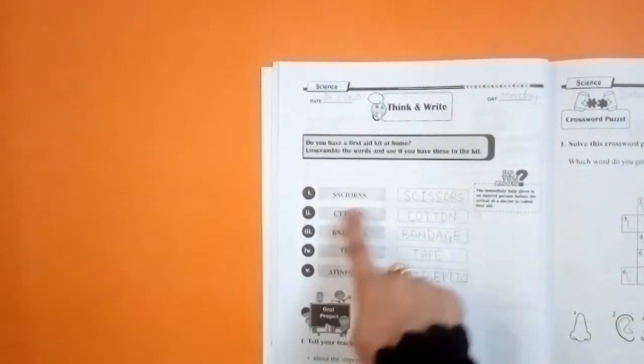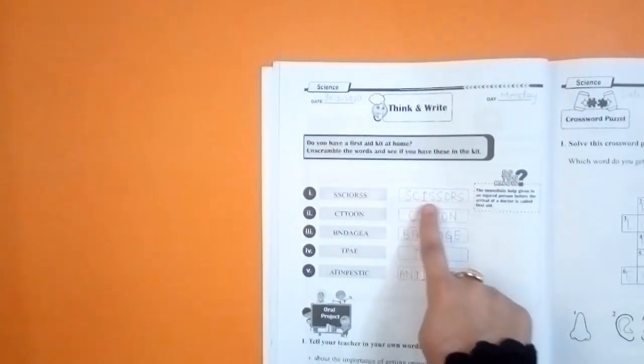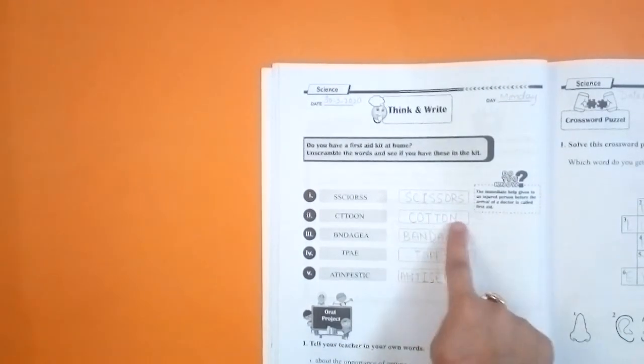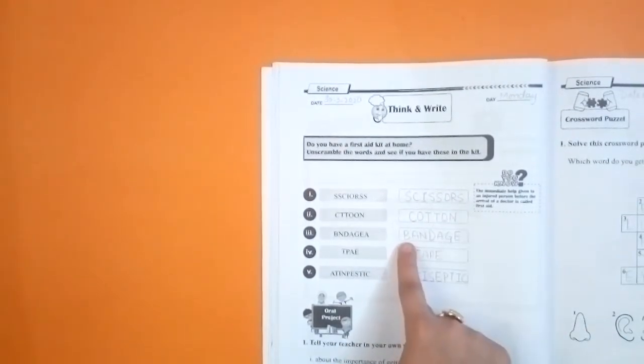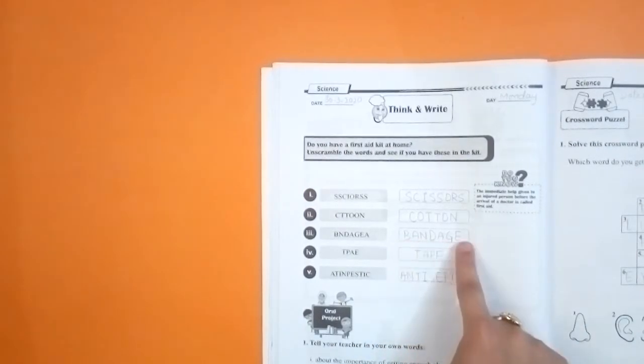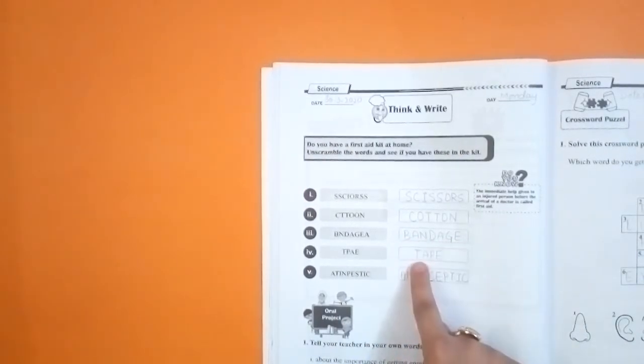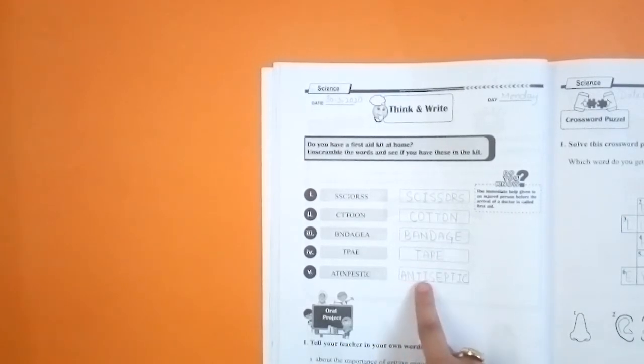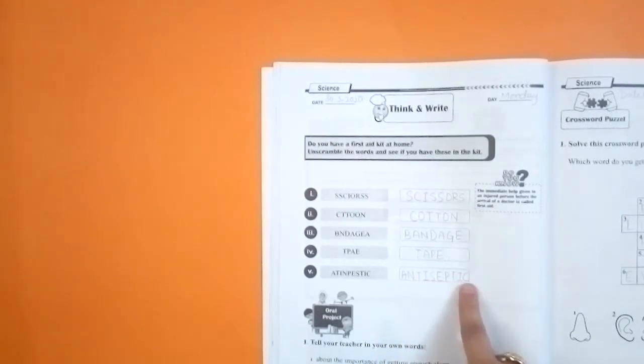Let's start. The first one is scissors. S-C-I-S-S-O-R-S. Next one, cotton. C-O-T-T-O-N. Next one, bandage. B-A-N-D-A-G-E. Next one, tape. T-A-P-E. Last one is antiseptic. A-N-T-I-S-E-P-T-I-C.